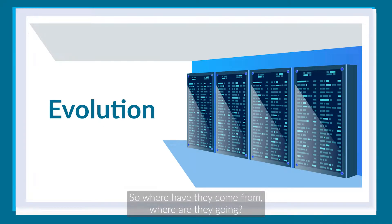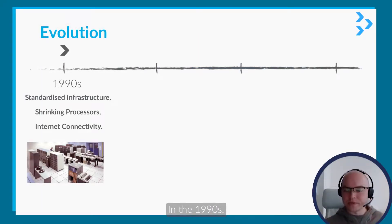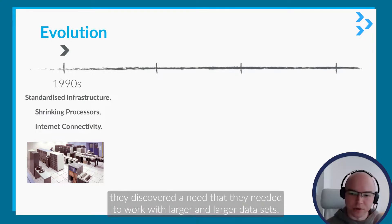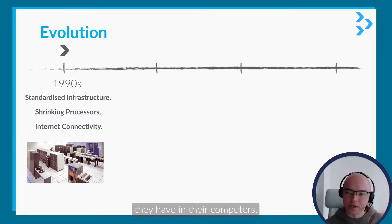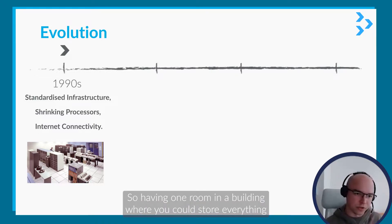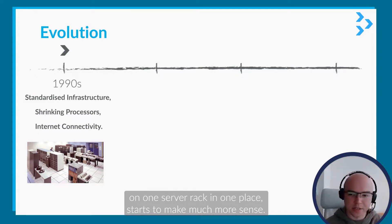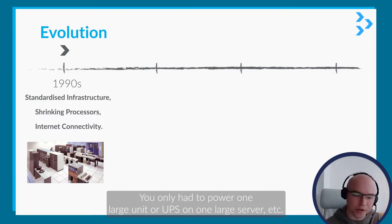So where have they come from? Where are they going? In the 1990s, they discovered a need to work with larger and larger data sets, and it didn't make sense to keep these on people's desktops. Having one room in a building where you could store everything on one server rack in one place started to make much more sense. You only had to power one large unit or UPS for one large server, and this is where the modern idea of the data center came around.